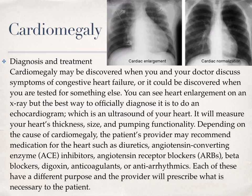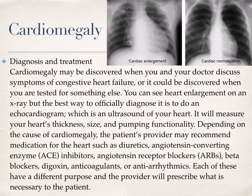Diagnosis and Treatment: Cardiomegaly may be discovered when you and your doctor discuss symptoms of congestive heart failure, or it could be discovered when you are tested for something else. You can see heart enlargement on an x-ray, such as the x-ray above, but the best way to officially diagnose it is to do an echocardiogram, which is an ultrasound of your heart. It will measure your heart's thickness, size, and pumping functionality. Depending on the cause of cardiomegaly, the patient's provider may recommend medications such as diuretics, angiotensin-converting enzyme or ACE inhibitors, angiotensin receptor blockers, beta blockers, digoxin, anticoagulants, or antiarrhythmics.